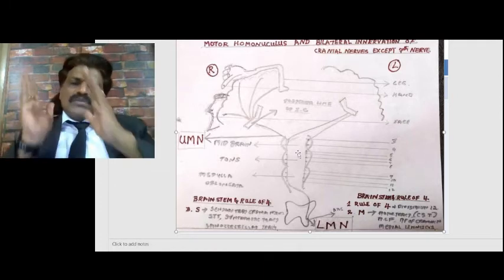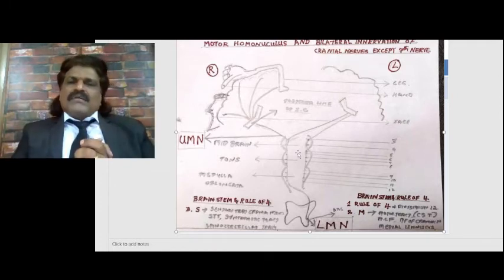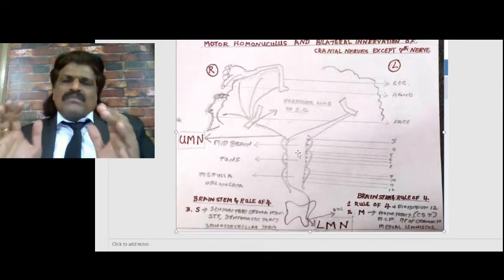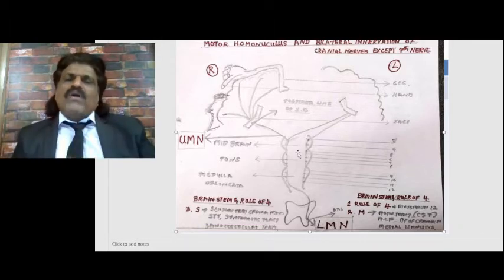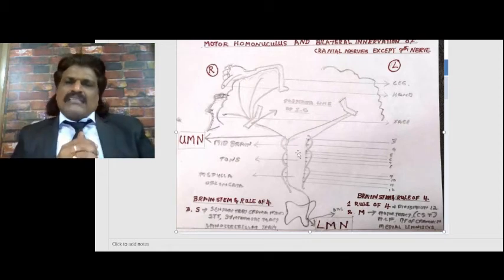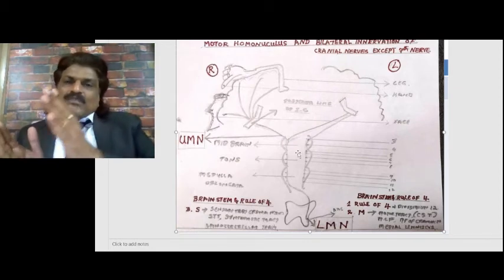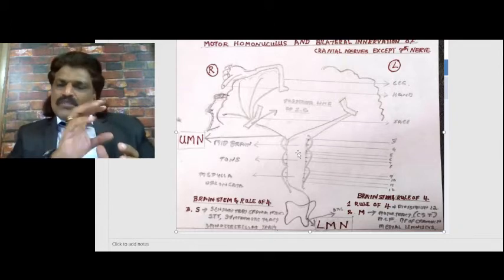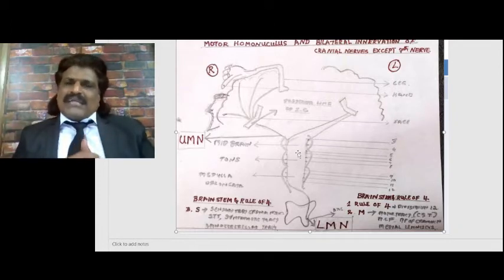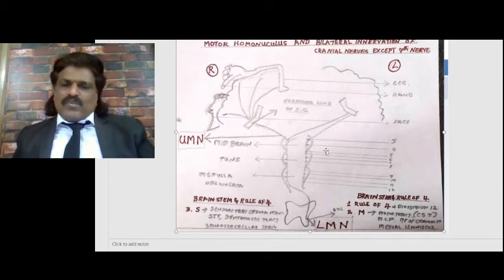Very importantly, lateral medullary syndrome (Wallenberg syndrome) does not produce hemiplegia. One of the common findings is vertigo. Hemiplegia is due to corticospinal tract lesion, but the corticospinal tract is placed medially - whereas Wallenberg syndrome involves structures placed sideways, where there is no corticospinal tract. This is very important to remember.